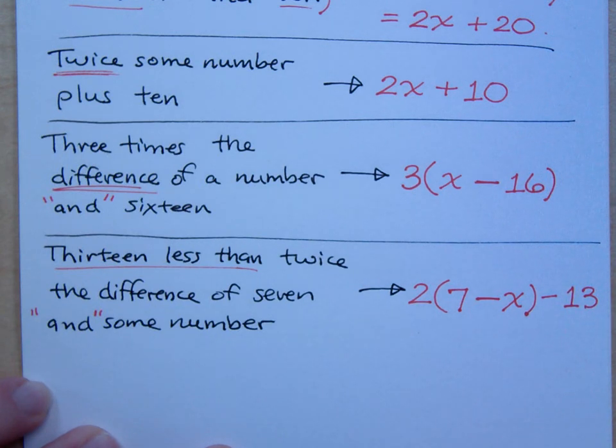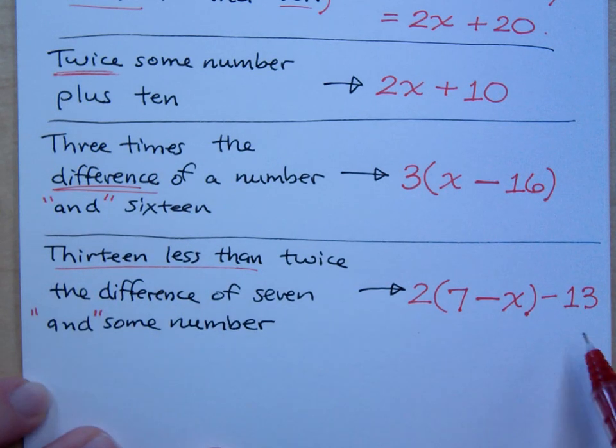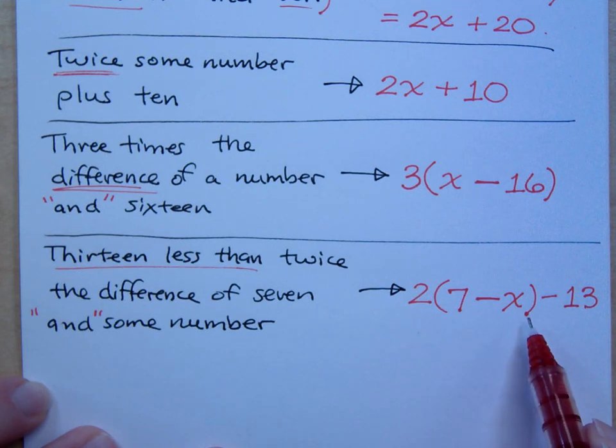You can't just change things about the subtraction symbol and think that it's going to be okay. Which again is why we have to make sure that when we see a phrase like thirteen less than we're putting that at the end. We're taking thirteen away from the rest of this.